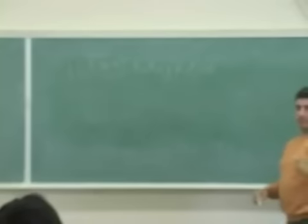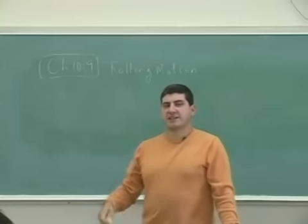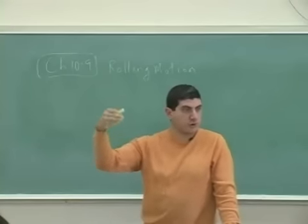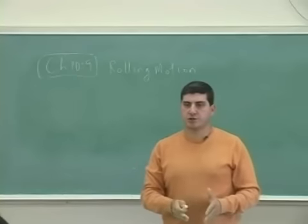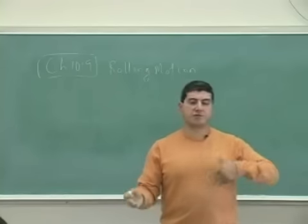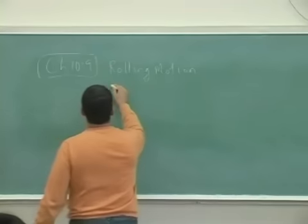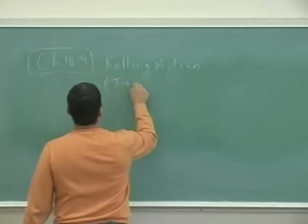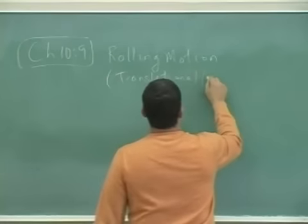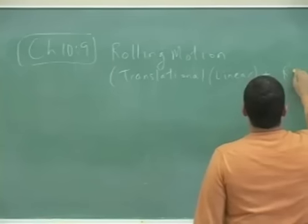Now, rolling motion. My previous lecture was kind of on purpose because I wanted to get to the point where I'm talking about rolling motion. Rolling motion is exactly what I was saying: it is the combination of translational motion plus rotational motion. Translational, often also called linear motion, plus rotational motion.